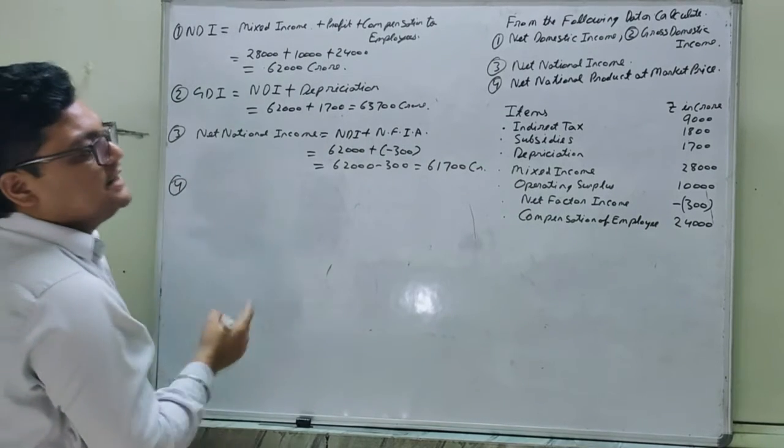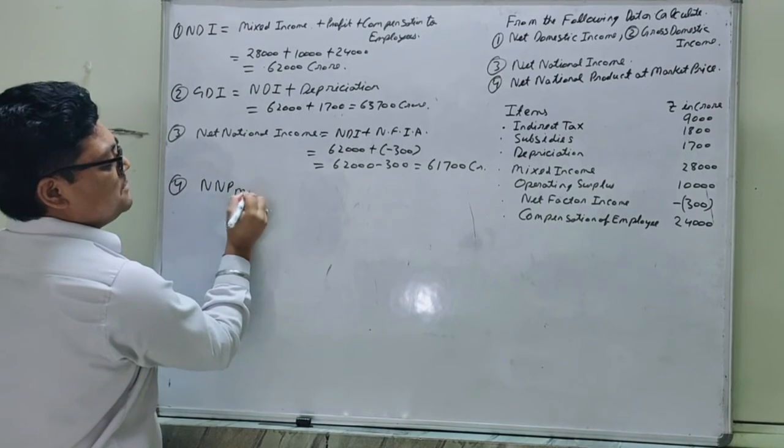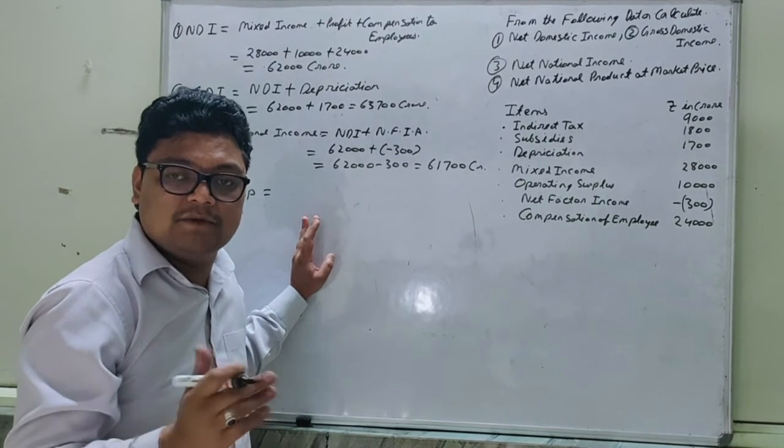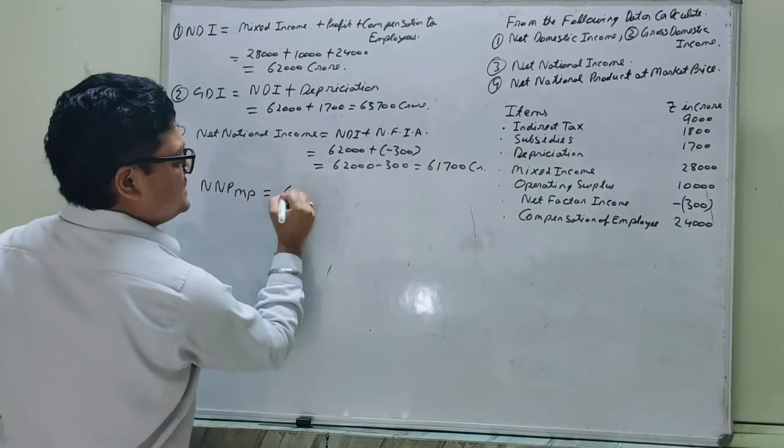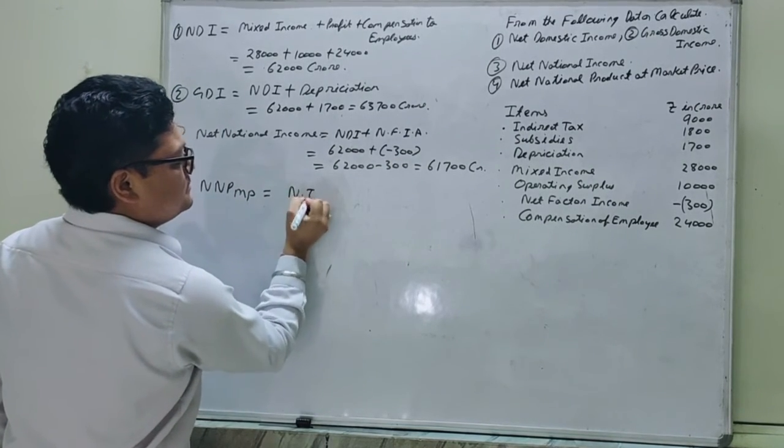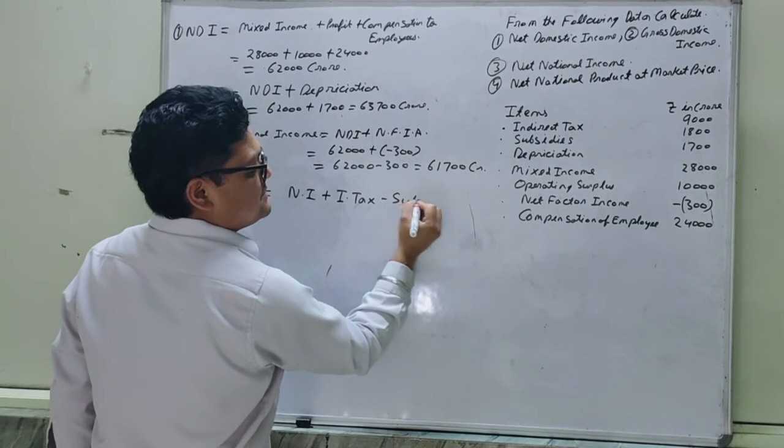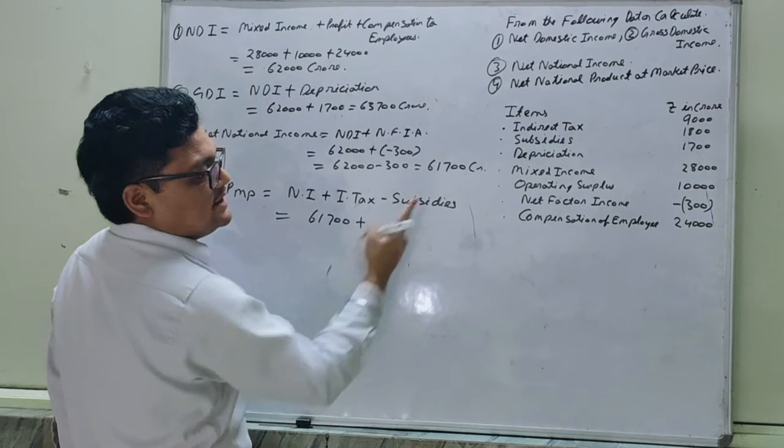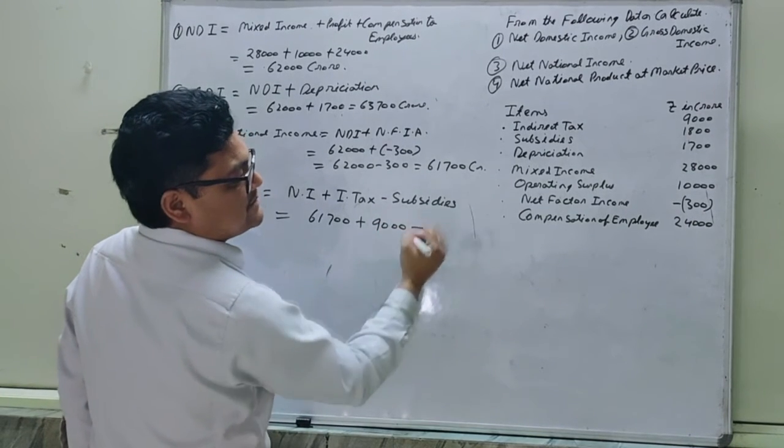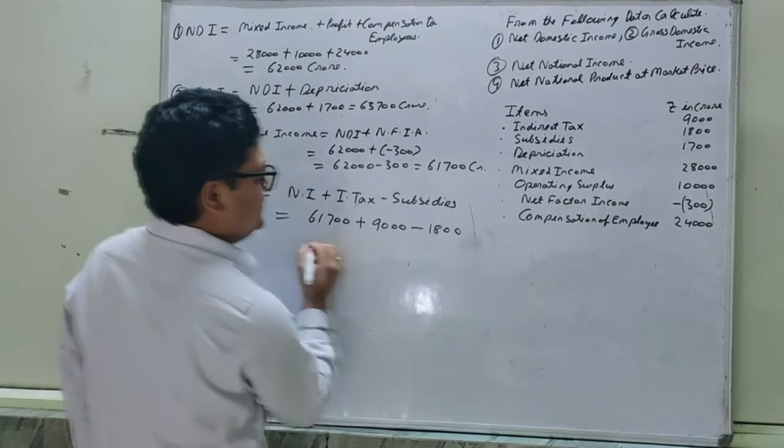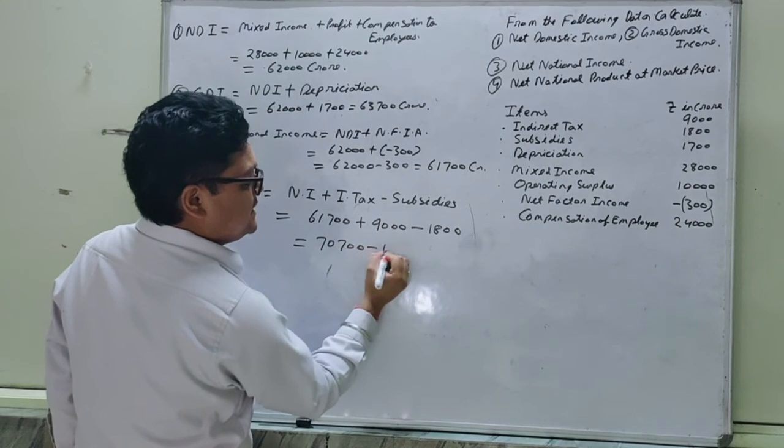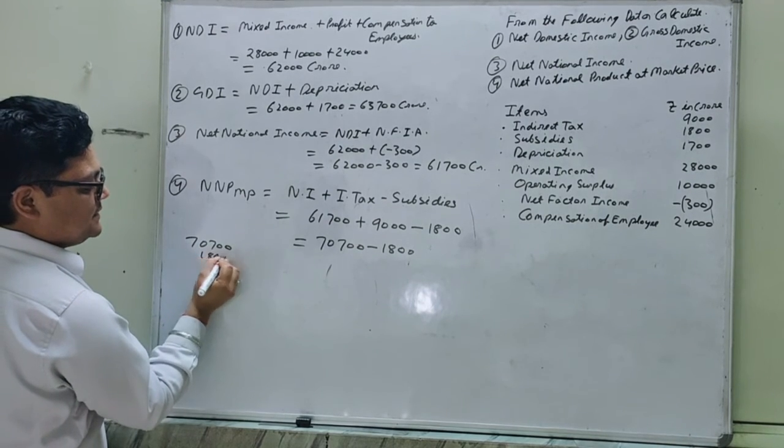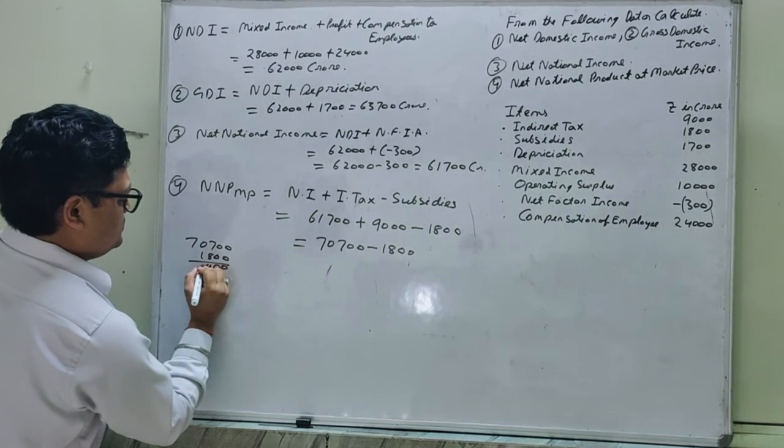At last, we calculate net national product at market price. If we have to come at market price, we plus indirect tax and minus subsidies. So national income is 61,700 plus indirect tax 9,000 minus subsidy 1,800. It will become 70,700 minus 1,800.